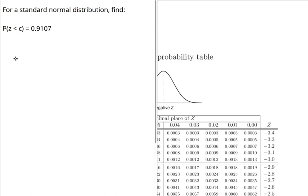What this is saying is that there is some z-score that there is 0.9107 to the left of it.